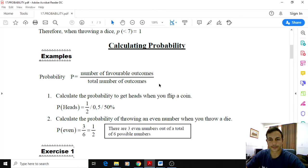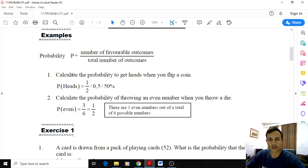So just some more examples. Calculate the probability to get heads when you flip a coin. Obviously the one side is heads, the other side is tails. So the number of favorable outcomes there is one, there is only one heads side, and the total possible number of outcomes is two, so it's one out of two, so it's fifty percent.